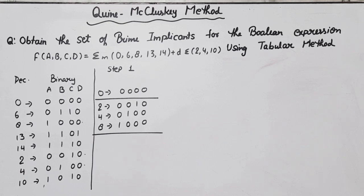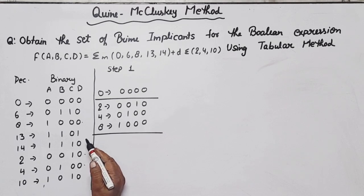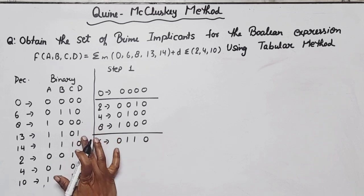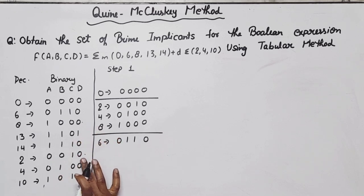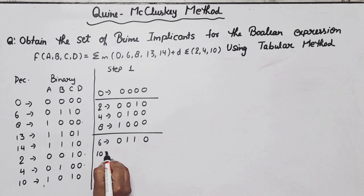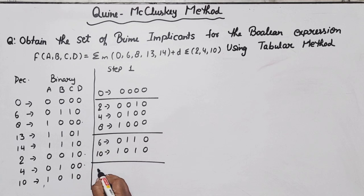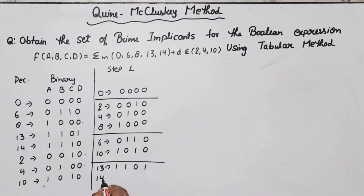Next, the group with 2 ones. We have 6 (0110) and 10 (1010). Then the group with 3 ones: 13 (1101) and 14 (1110).